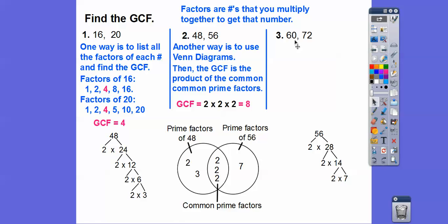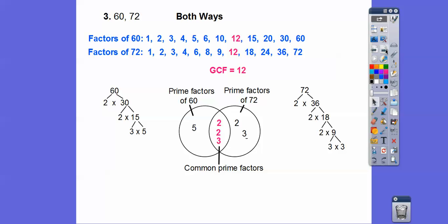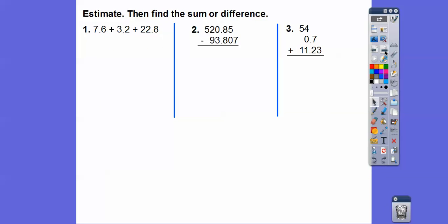For this one here, we'll do it both ways, 60 and 72. You don't have to do it both ways. So here's one way is to list all the factors of 60. There's a lot of them. These are all the numbers that go into 60. There's a lot of them that go into 72. And the greatest one is that 12 right there. Or you can do the prime factorization and then do Venn diagram. They both share 2 times 2 times 3. And if you multiply those, 2 times 2 is 4, 4 times 3 is 12.